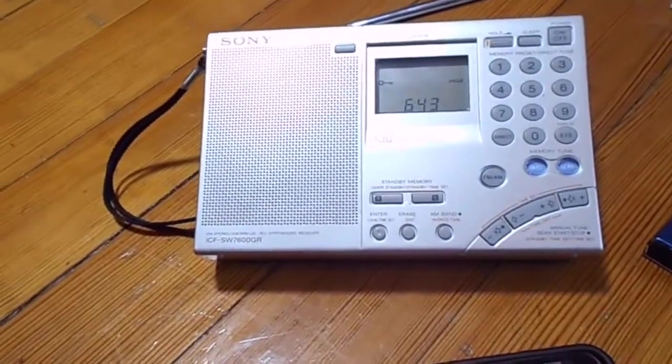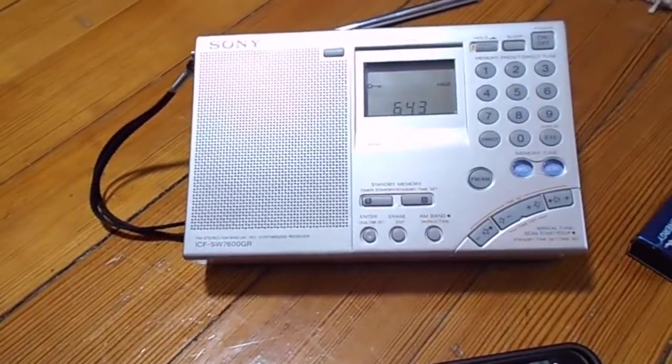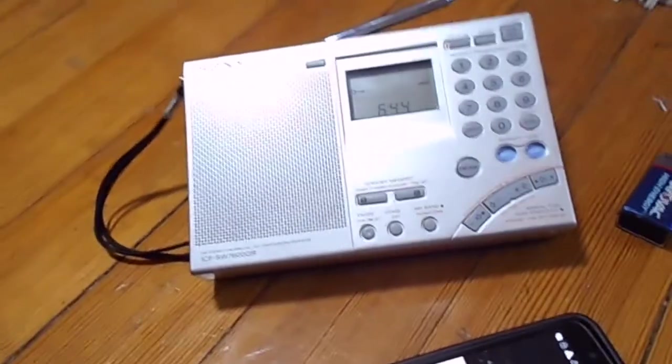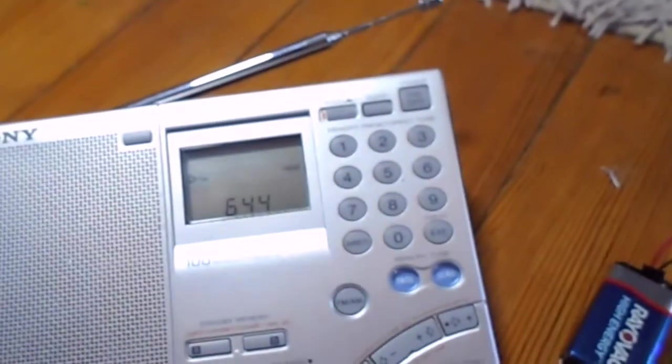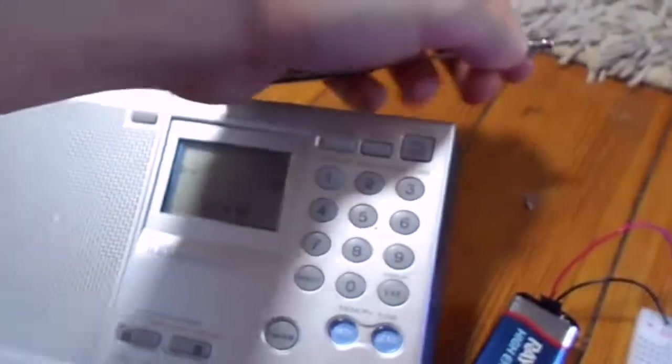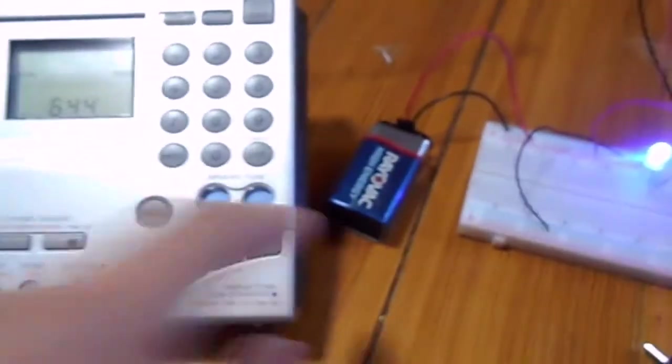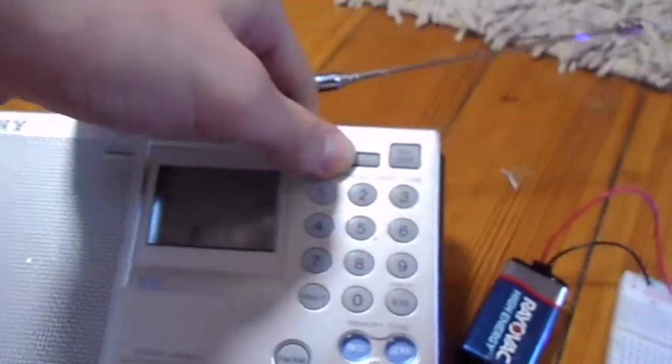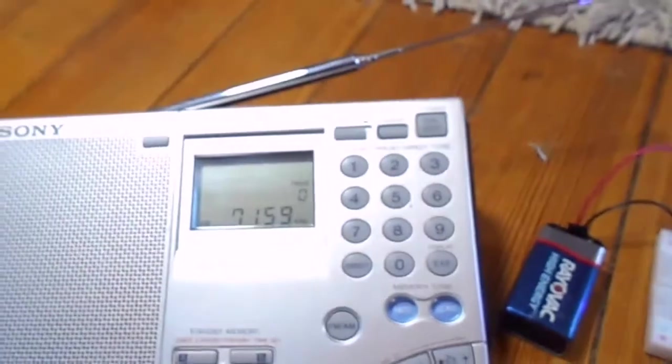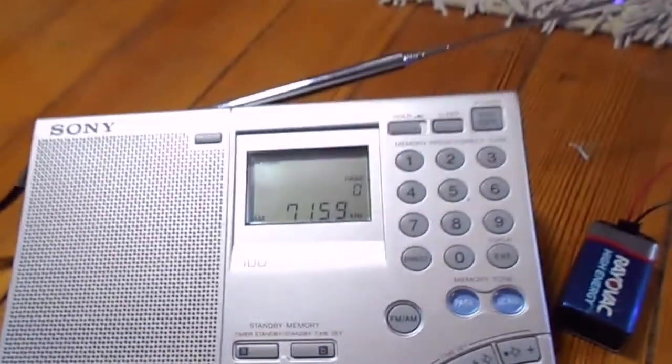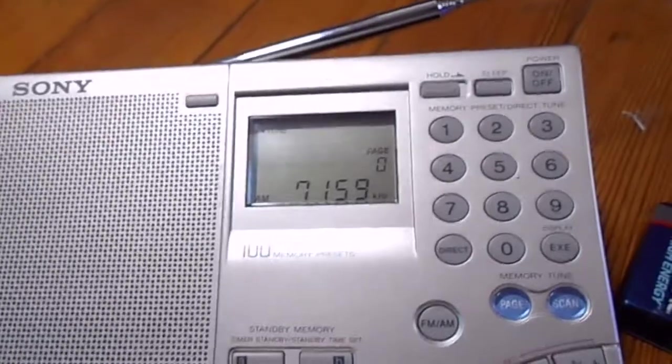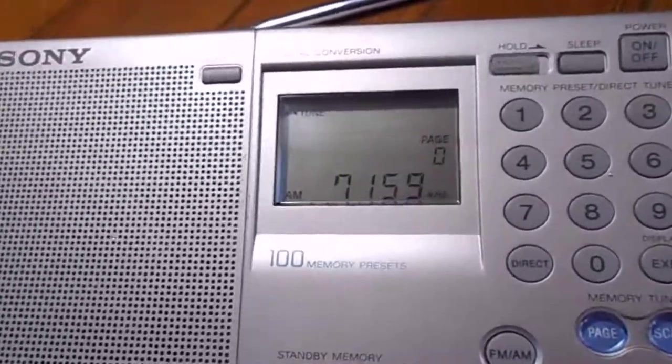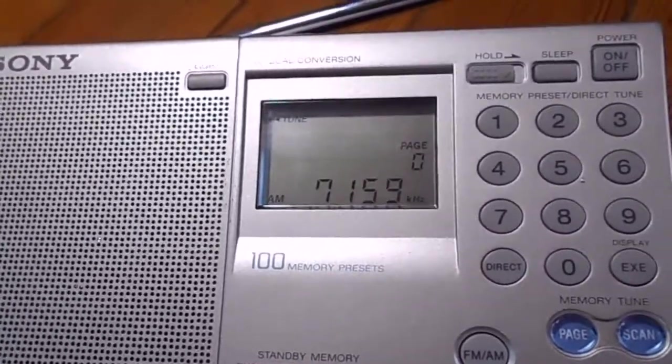So now to pick this up you just need an AM capable radio. So here I have my Sony SW 7600 GR. Any radio would do as long as you can go to the frequency your crystal oscillates at and you can set your radio to AM. So I'll turn the volume down and we'll turn the radio on. Now I already have it set to what the crystal is, but you're going to want to change the frequency to your crystal. So this particular crystal is 7.159 megahertz.